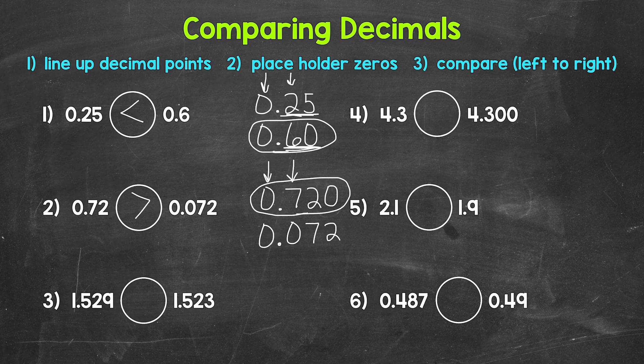We can read this from left to right as 72 hundredths is greater than 72 thousandths.